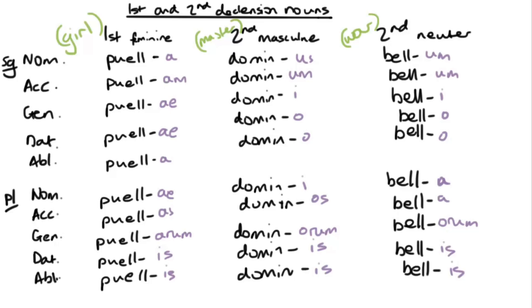Now we're actually going to look at some actual nouns in Latin. So we're going to take three examples, one for each gender. For the feminine, we're going to go with the noun puella, which is first declension. Then we're going to go with master, dominus, for second declension masculine nouns, and we're going to go with bellum, war, for second declension neuter nouns.